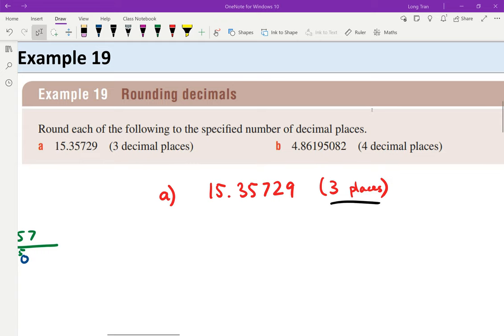In rounding decimals, when they say three decimal places, they want one, two, three decimal place values after the decimal point.